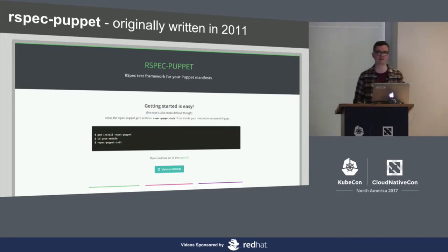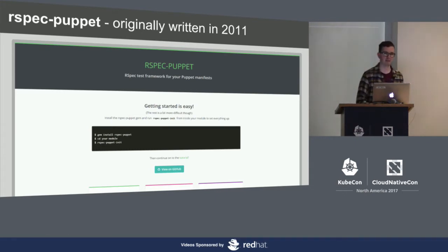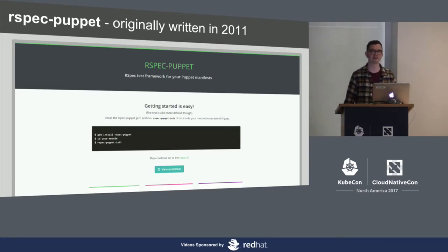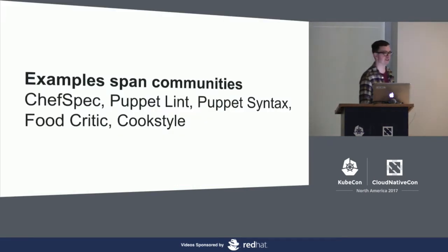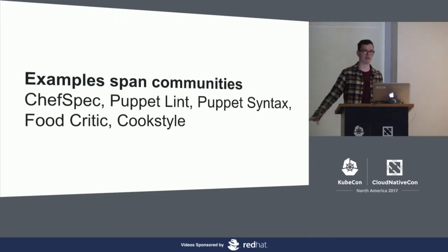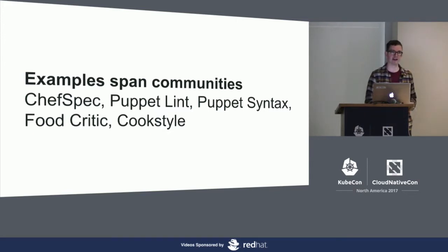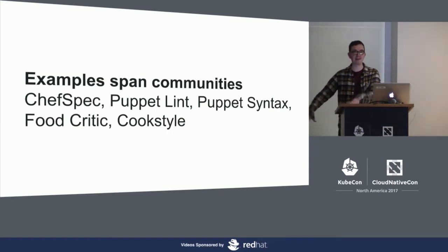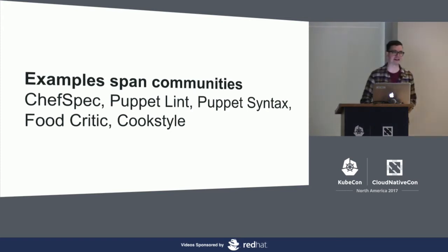Roughly 2011, something interesting happened. It wasn't just RSpec Puppet — there was ChefSpec as well, the same year, plus a few other tools. RSpec Puppet was a tool for using the Ruby RSpec testing library to validate and verify your Puppet manifests. ChefSpec was exactly the same. This idea spans different communities — Puppet Lint and Food Critic from the Chef world, and a number of others. Those tools have really stood the test of time. They've matured, ended up as the best practice way of doing things, and added value.